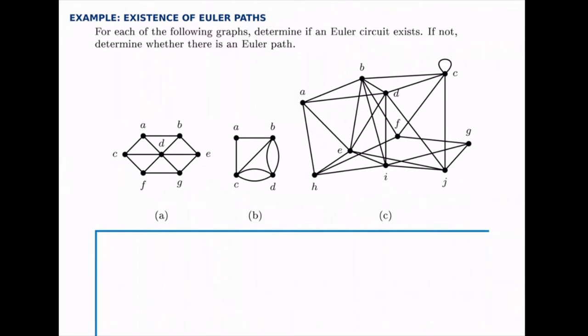So for each of these, we're going to count the degree on each node. Remember the rule: if all the nodes have even degree, there's an Euler circuit. If not, see if two of them exactly have odd degree. If so, there's an Euler path. If not, there's neither an Euler path nor an Euler circuit.